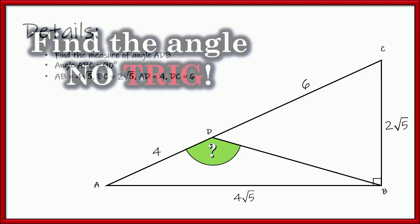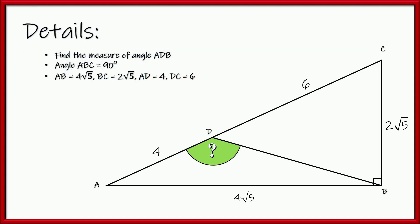So let's go ahead and try it, do it together, hang out, do some math, and have some fun. Here are the details. We've got to figure out the measurement of angle ADB, and triangle ABC is a right triangle, and you can see the lengths posted on the screen. A to D is 4, D to C is 6, CB is 2 root 5, and AB is 4 root 5.